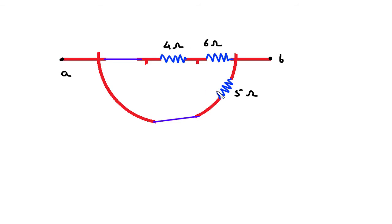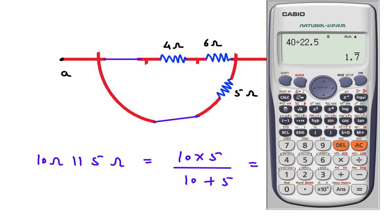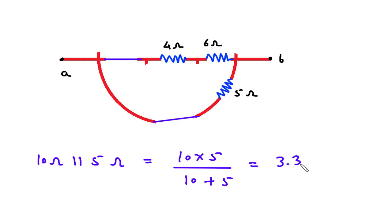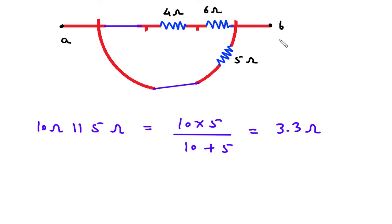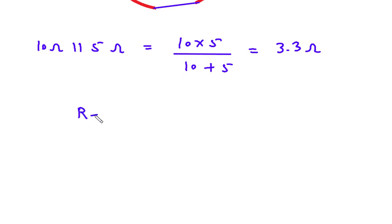Now 10 Ohm is in parallel with 5 Ohm. 10 Ohm parallel with 5 Ohm equals 10 multiplied by 5 divided by 10 plus 5, which gives 3.3 Ohm. So the resistance between A and B is RTH, and RTH is equal to 3.3 Ohm.